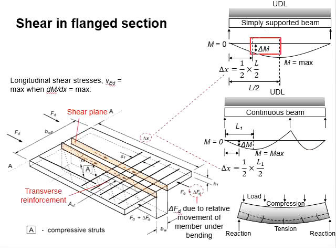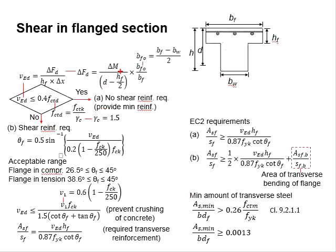The delta M is referring to the differences between the moment located at delta X. This d minus hf divided by 2 is referring to the lever arm between the centroid of the flank sections to the centroid of the reinforcement bars. And there is a ratio of effective flank divided by the width of the flank.